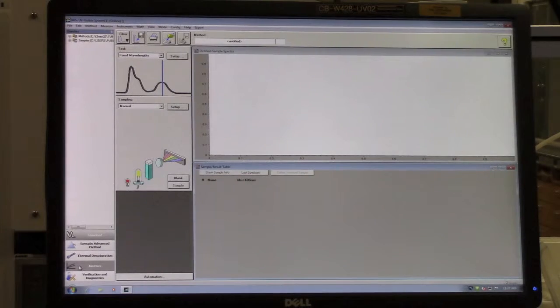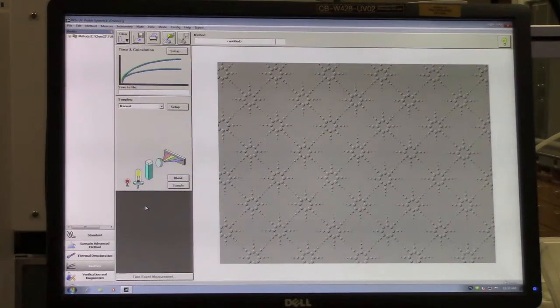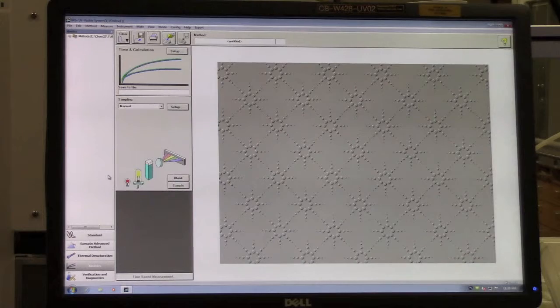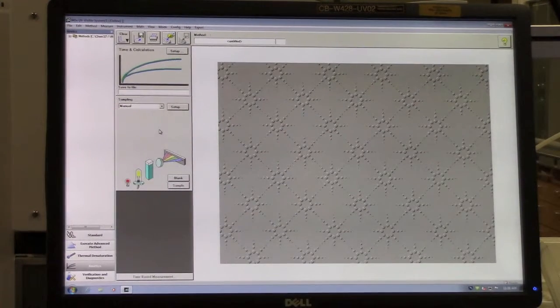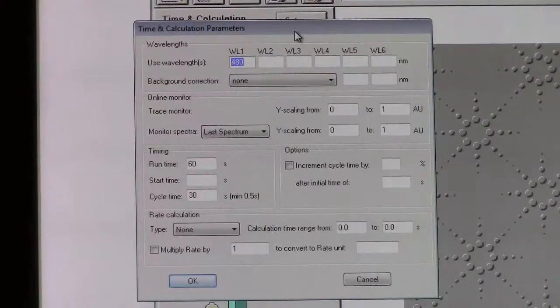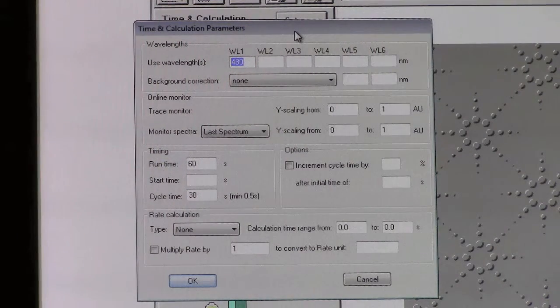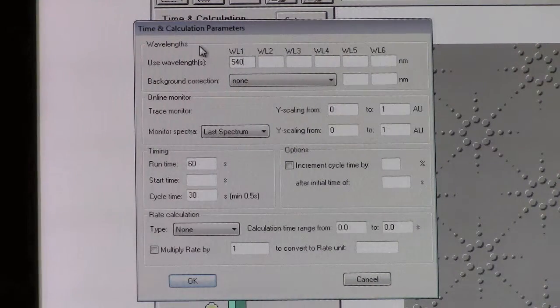At the bottom left corner of the software, you'll see Kinetics. Click on Kinetics and a different mode will load. At this point, make sure you have adequately warmed up the lamps and set both the tungsten and deuterium lamps to the on position. Prior to taking a blank in this mode, set up Time and Calculation at the top of the screen. Once you've opened the Time and Calculation parameters dialog, you can input wavelengths. We'll only need one: 540 nanometers, as listed in your lab manual.